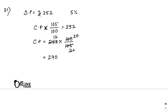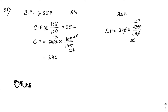At what price should he sell the tie to gain 35%? New SP equals 240 into 135 by 100. Simplifying: 5 into 10, then 12 into 27 gives 324 as your answer.